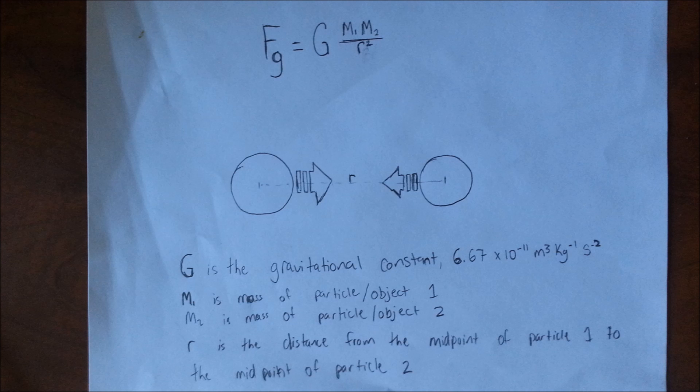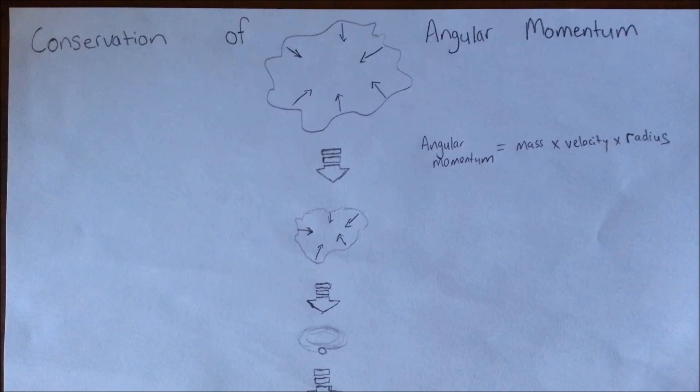Capital G is the gravitational constant which is 6.67 times 10 to the negative 11 newton meters per kilogram squared. M1 is the mass of molecule 1 and M2 is the mass of molecule 2. R is the distance between the midpoint of M1 and M2.